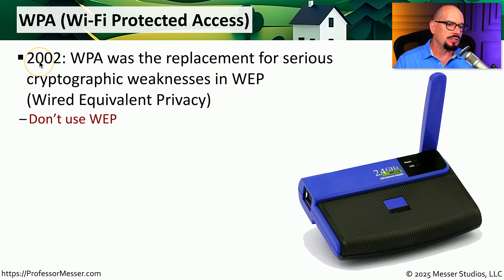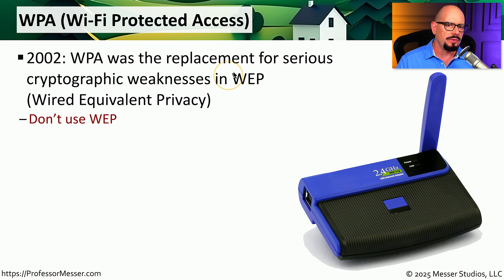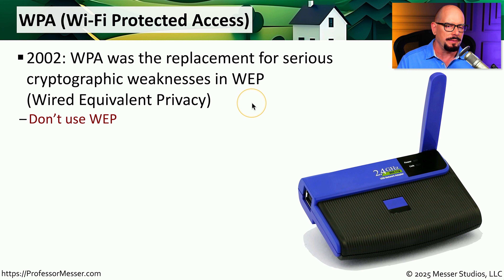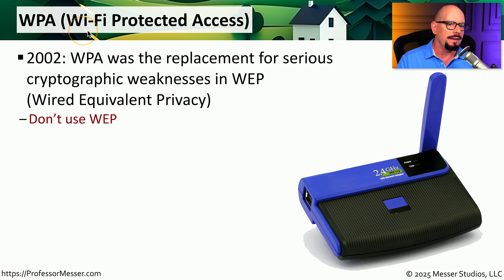If we go back to 2002, a big shift took place in the encryption of data on wireless networks. We transitioned from one of the original encryption types, which was WEP — that stands for Wired Equivalent Privacy — and we transitioned to a new style of encryption known as WPA, which stands for Wi-Fi Protected Access. We found significant cryptographic vulnerabilities with WEP, and that drove us towards this transition to WPA.